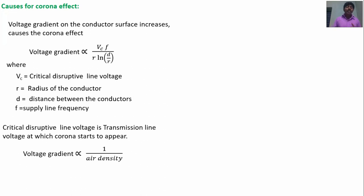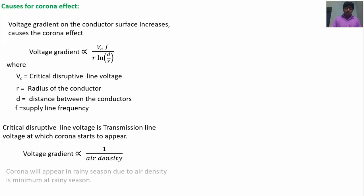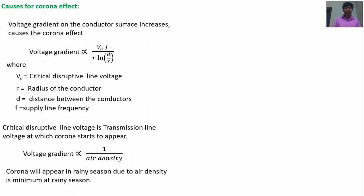Voltage gradient is also inversely proportional to air density. If the air density is lesser, voltage gradient will be higher. So in the rainy season, the air density is very minimum, that is why in the rainy season corona effect will be more. Because if it rains, the air density is lesser; if air density is lesser, voltage gradient on the surface will be higher; and if voltage gradient on the surface is higher, the corona effect also increases.